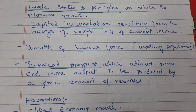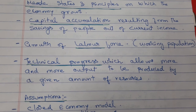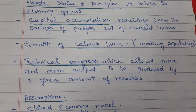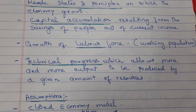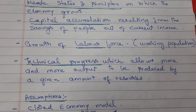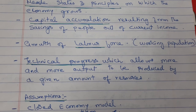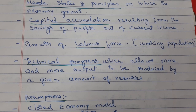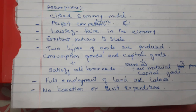Capital accumulation results from the savings of people out of current income. Growth of labour force refers to the working population. Technical progress allows more and more output to be produced by a given amount of resources.